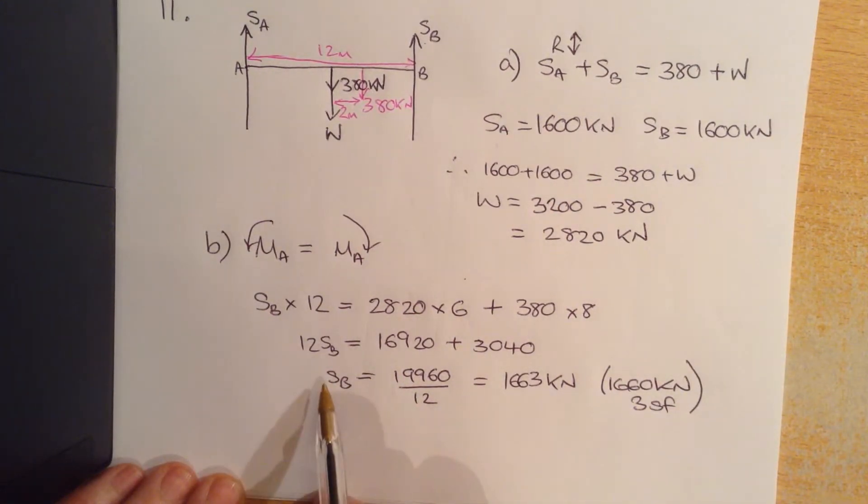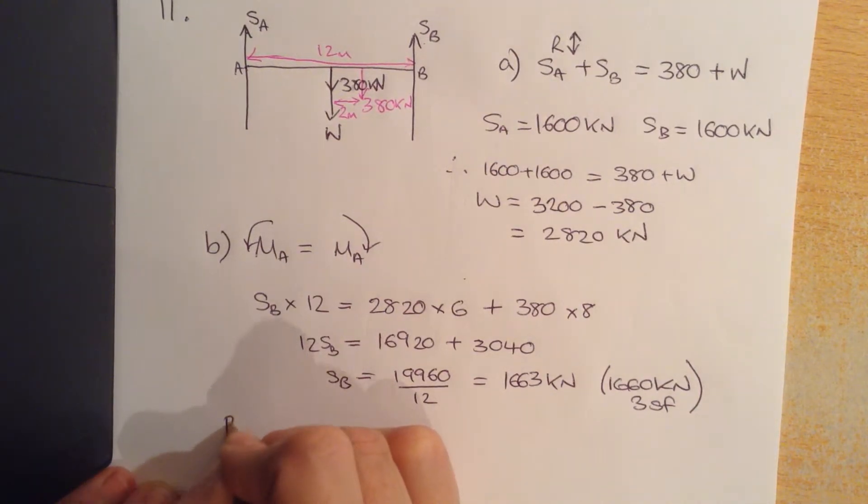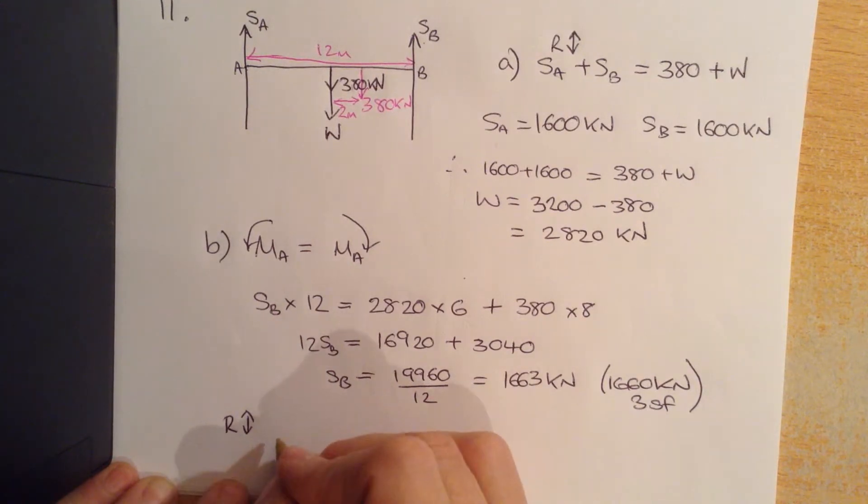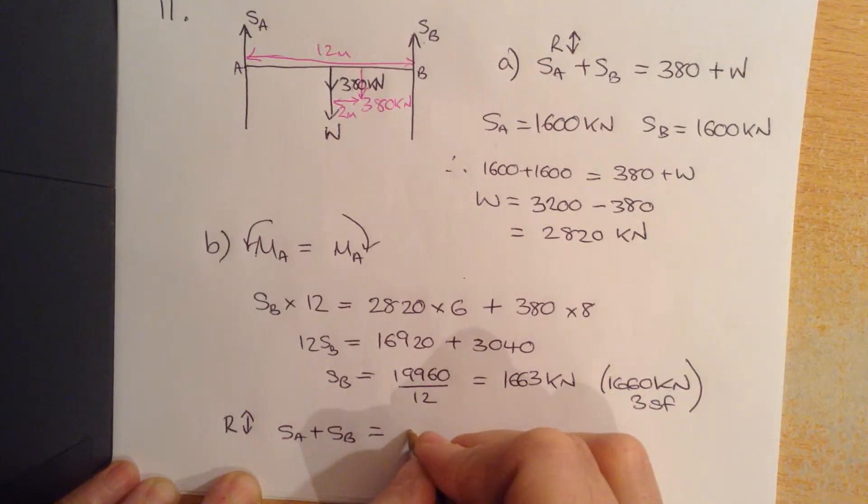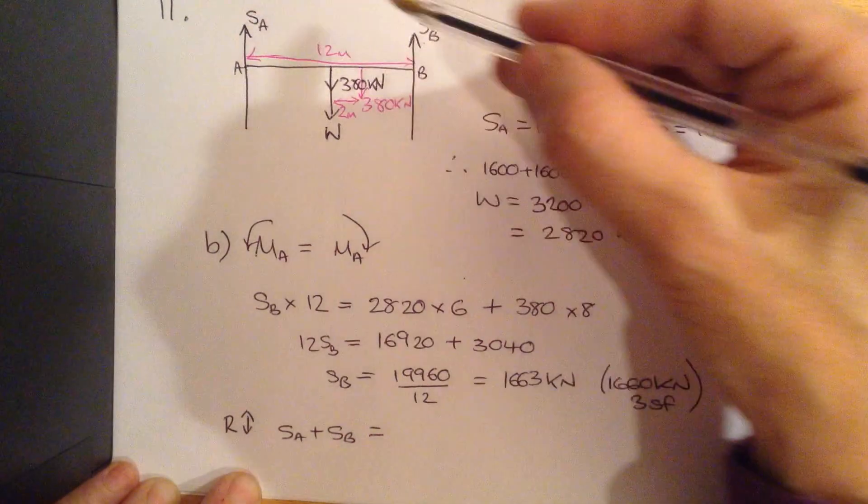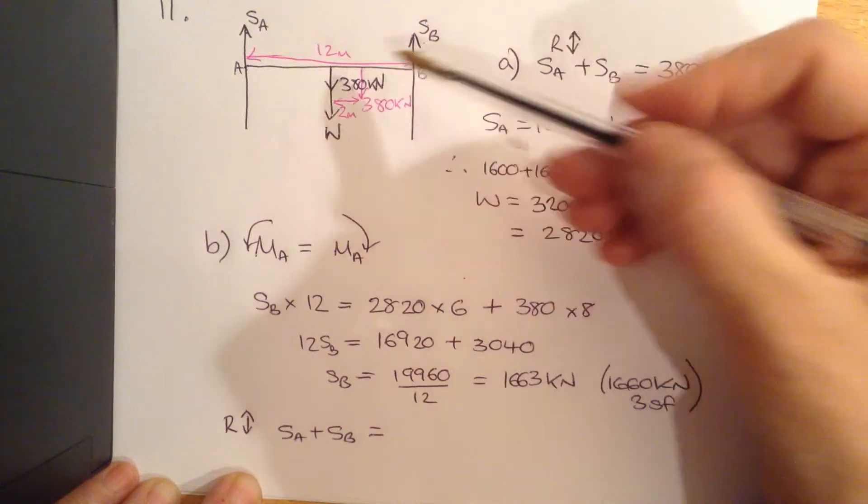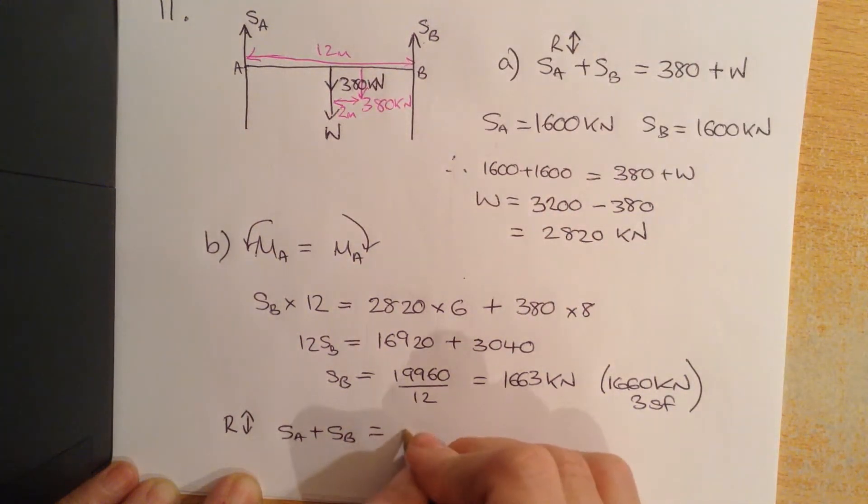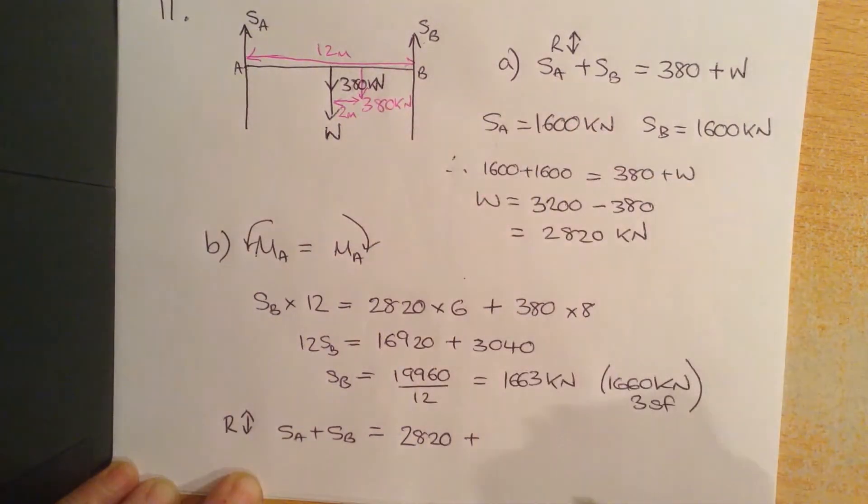So we've worked out one. Let's work out the other one by resolving vertically. So SA plus SB is equal to the 2 upward forces, it's going to be balanced by the 2 downward forces, so the weight 2820 plus the mass on the crane 380. We know what SB is, we've worked it out here, so SA